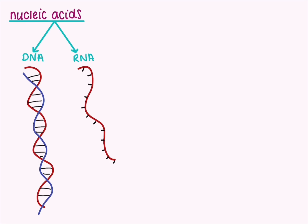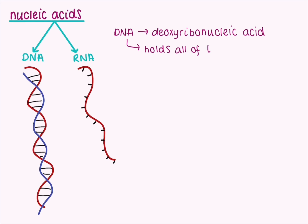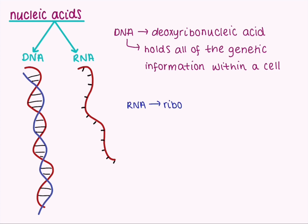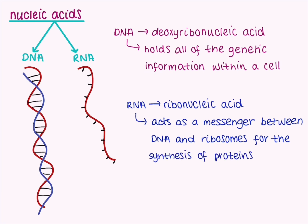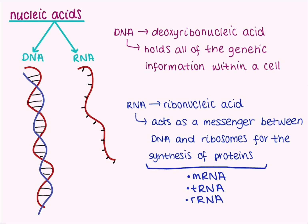DNA specifically stands for deoxyribonucleic acid, and this is our genetic information holding molecule — it holds all of the genetic information within any kind of cell. RNA stands for ribonucleic acid. It is a carrier molecule that carries messages from the DNA to the ribosomes and allows proteins to be synthesized. Within RNA, there are a few types: mRNA, which is messenger RNA; tRNA, which is transfer RNA; and rRNA, which is ribosomal RNA.